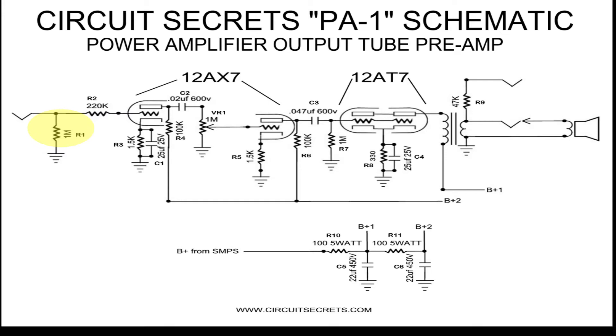The grid leak resistor also acts to reference the grid to the ground, so the grid can appear more negative than the cathode, which has a slight positive bias voltage.